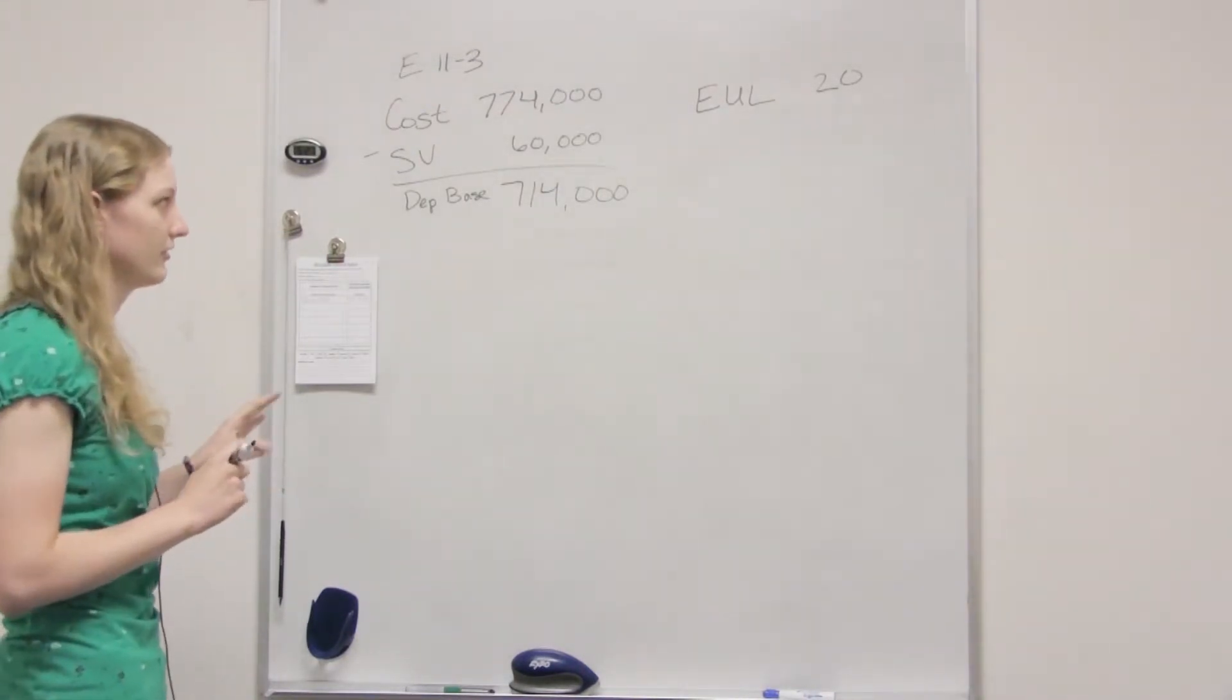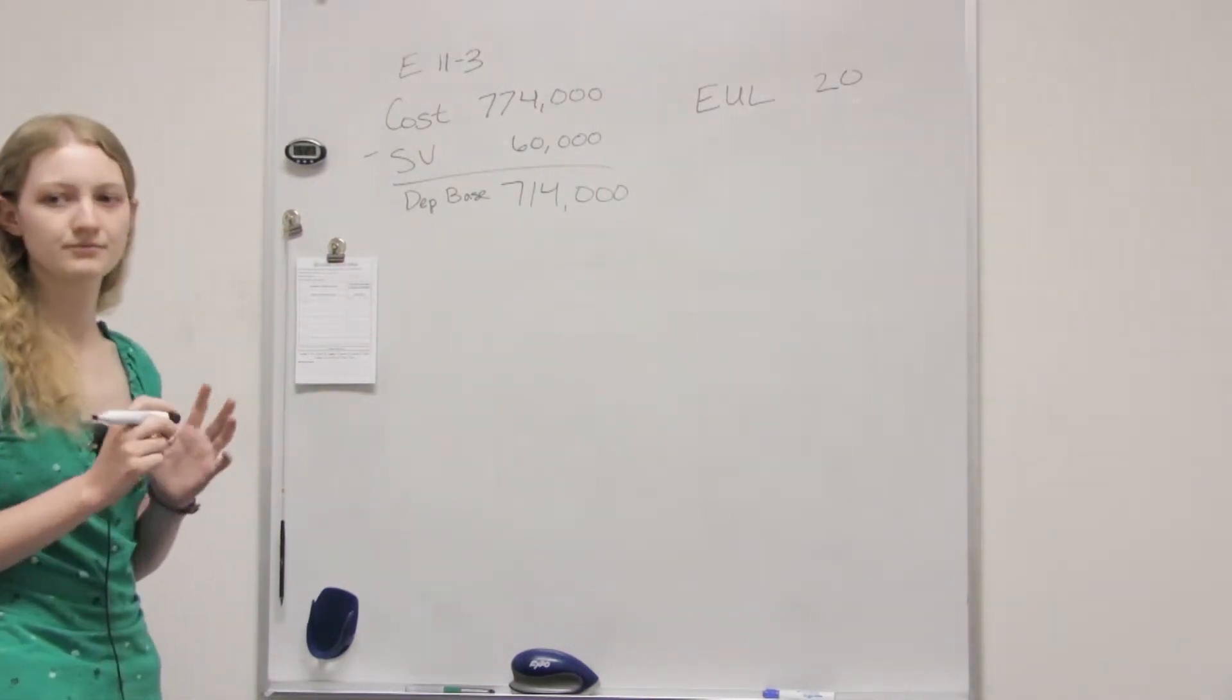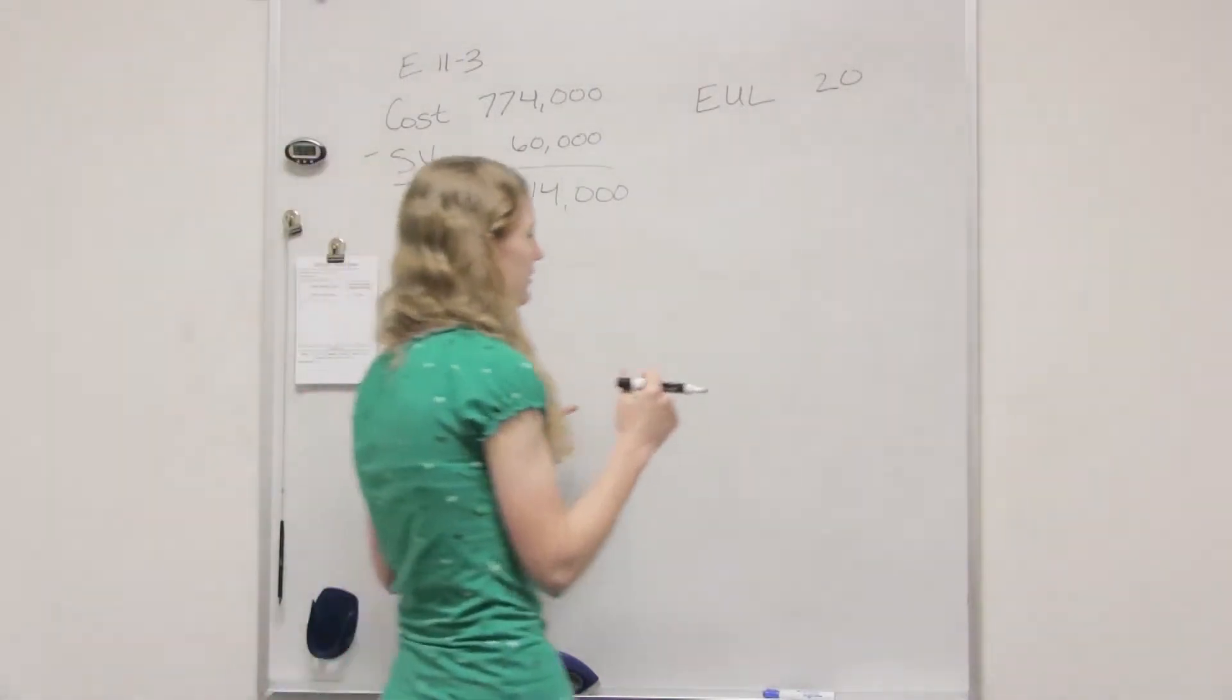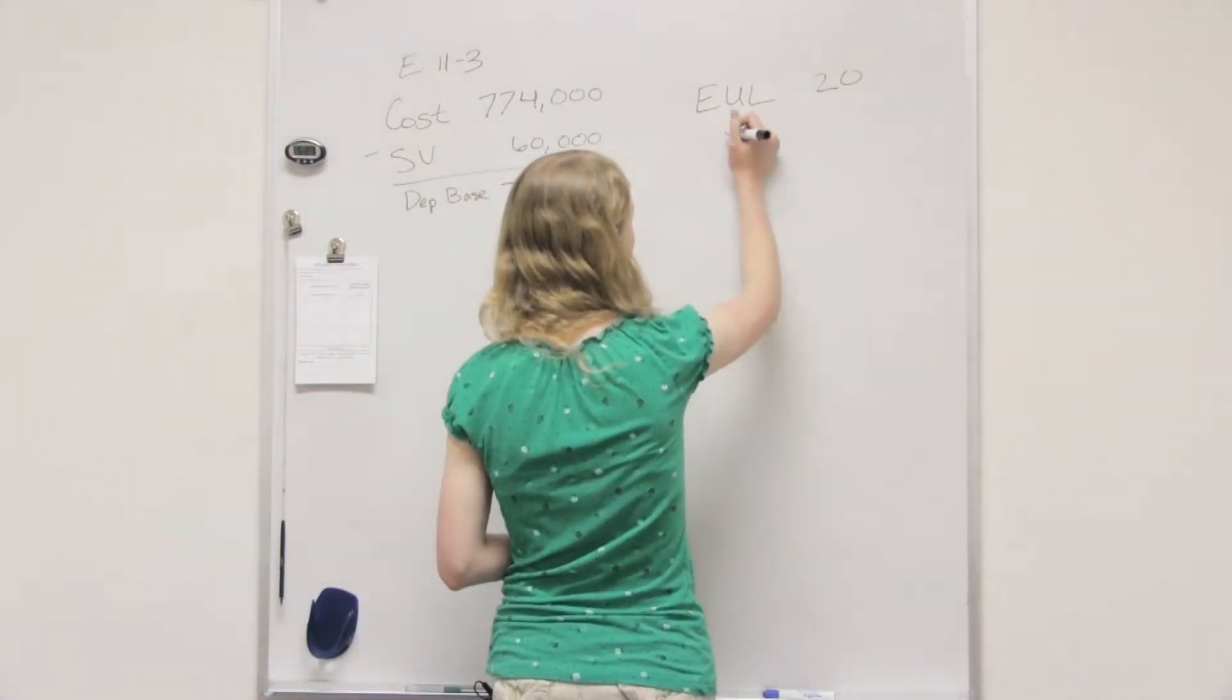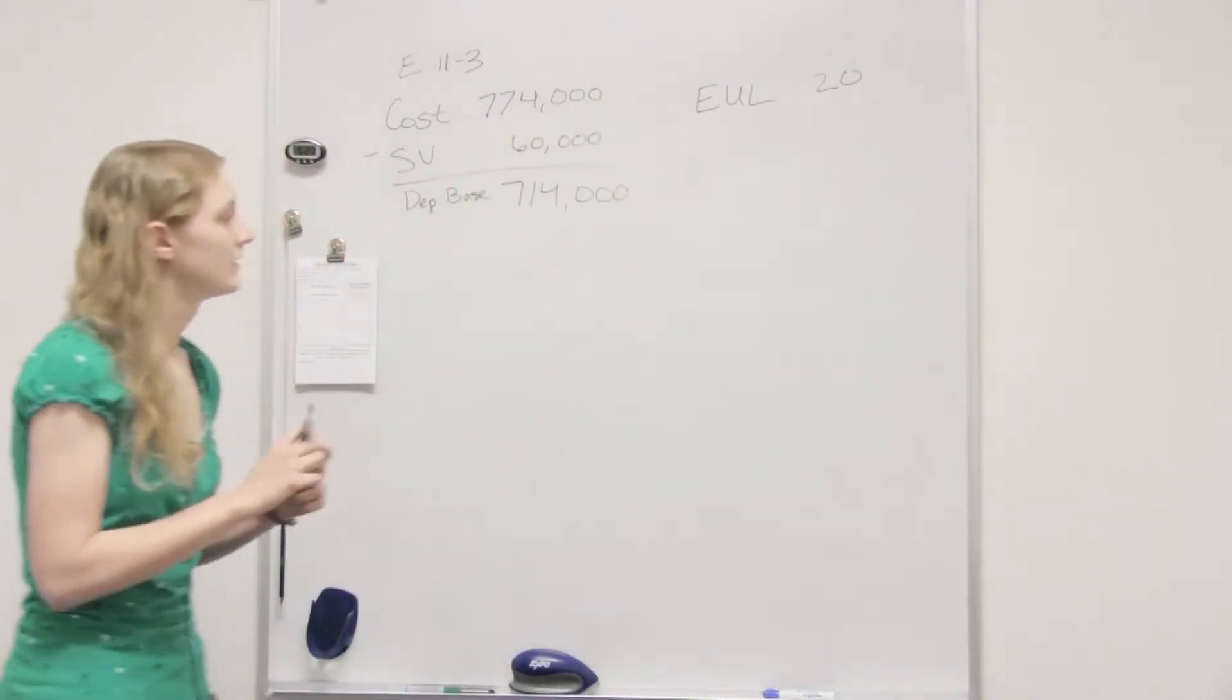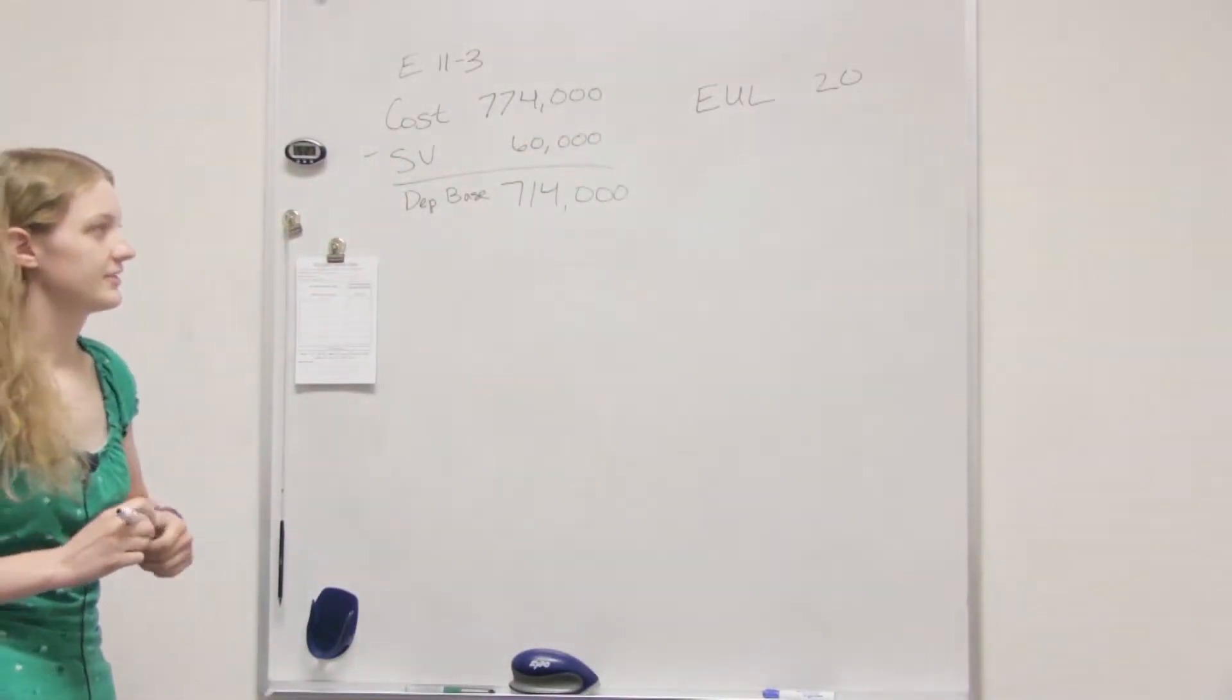And then we have to find the ratio that we're going to use. That's our denominator. And this is the new one we haven't talked about? Sum of your digits? Sum of your digits.